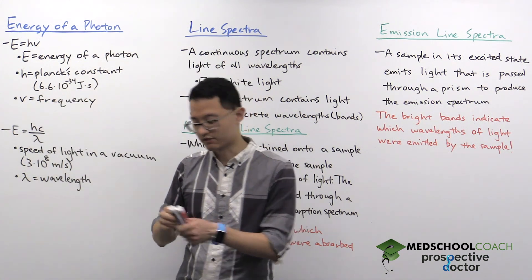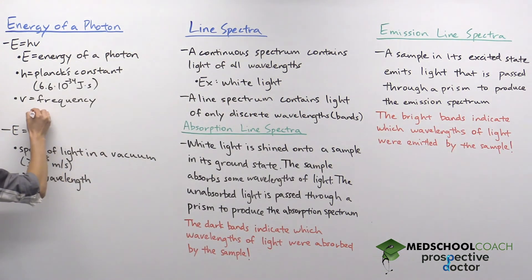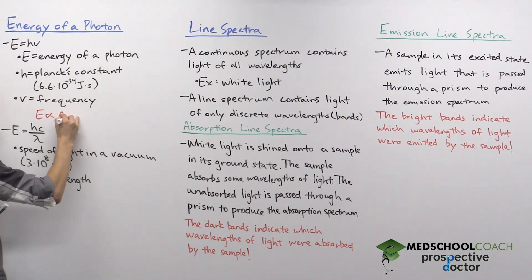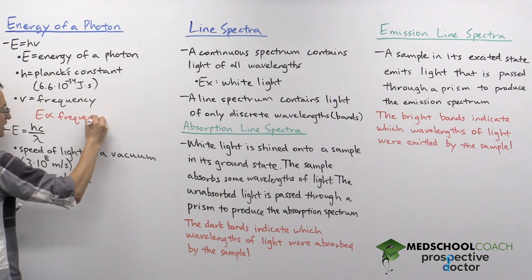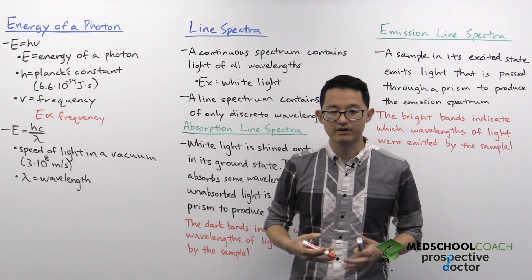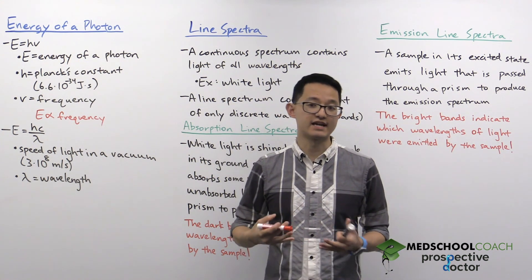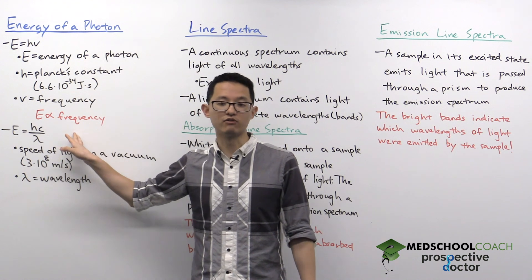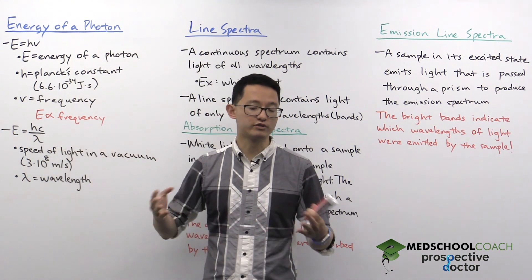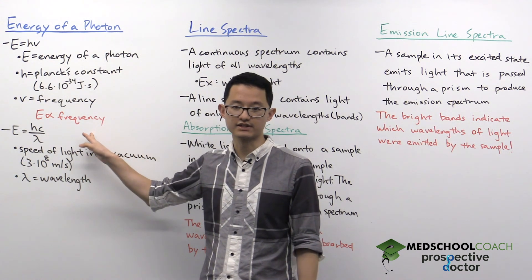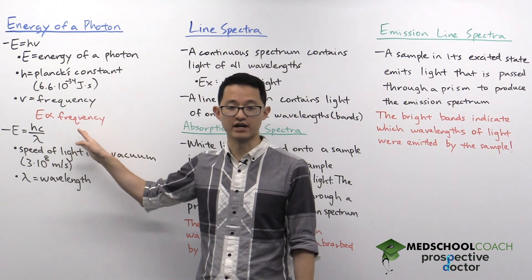What's particularly important about this equation is the proportion: since H is a constant, the energy of a photon is directly proportional to the frequency of the photon. This is important to remember not only because the MCAT tests proportions, but because this is true not only for light but for all types of waves — if you increase the frequency, you're increasing the energy of that wave.